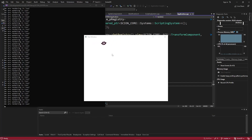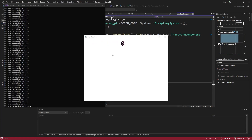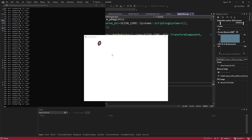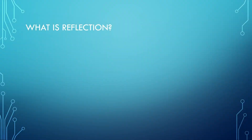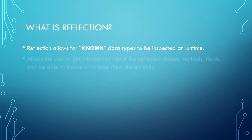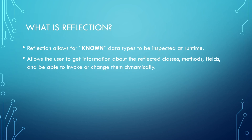We'll also be using reflection to help us draw all the components that each entity has in the editor. So for now let's have a small talk about reflection. Reflection allows for known data types to be inspected at runtime. This allows us to get information about the reflected classes, methods, and fields, and be able to invoke those methods or change them dynamically.